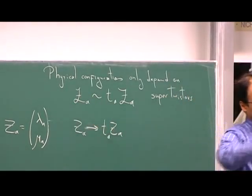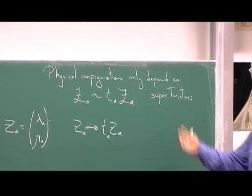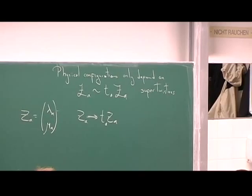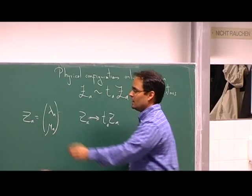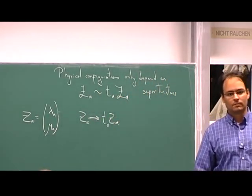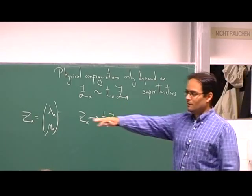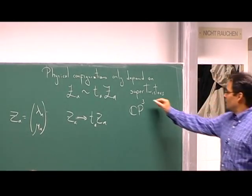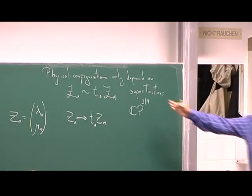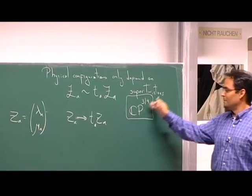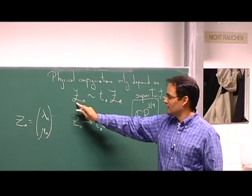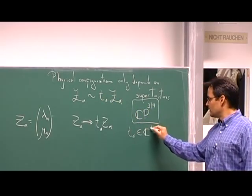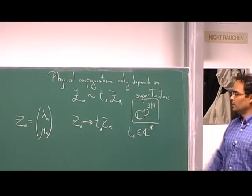If you have a vector of objects and you can rescale and your physical configuration doesn't change, we say that the corresponding physical object is defined on the projective space defined by these variables. If you only had four bosonic components and were allowed to rescale them, that space would be CP^3. But we also have four fermionic components, so we say the super twisters live in CP^{3|4}. This is a supersymmetric space where objects are identified modulo any bosonic rescaling — TA must belong to C*. So that's why they live in CP^{3|4}.